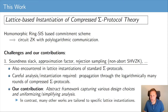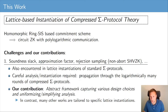For example, we have to deal with soundness slack, approximation factors, rejection sampling, and non-abort special honest verifier zero-knowledge. These challenges are not unique to compressed sigma protocol theory and are also encountered when instantiating standard sigma protocols from lattice assumptions. The difference, however, is that compressed sigma protocols have logarithmically many rounds, and these aspects propagate through these rounds — for example, the soundness slack accumulates through the logarithmically many rounds. This requires us to be very careful in the analysis and instantiation of the protocols.